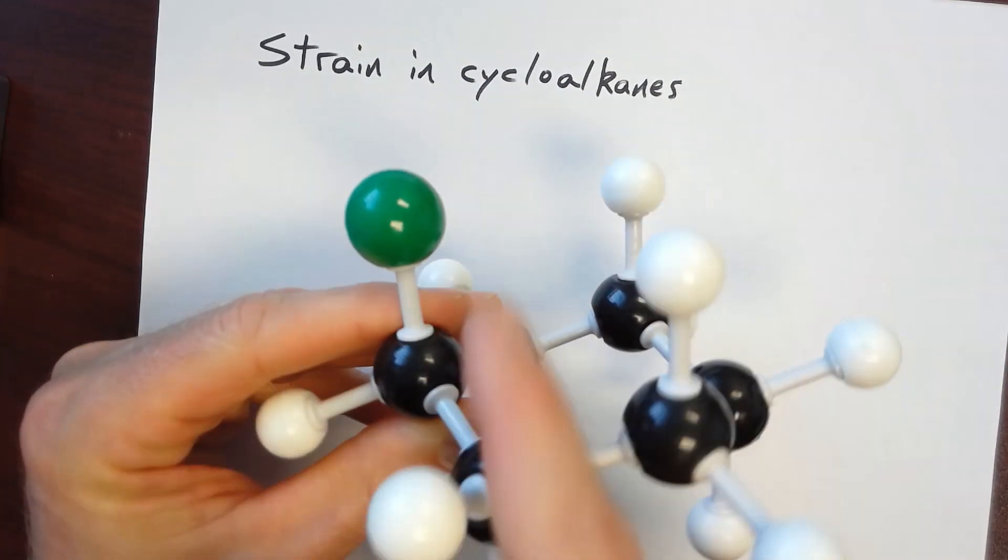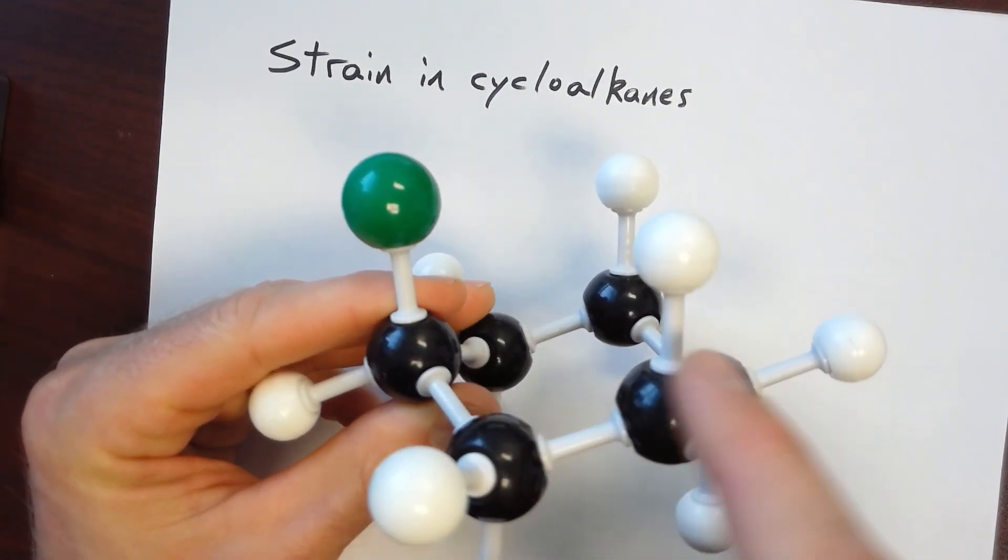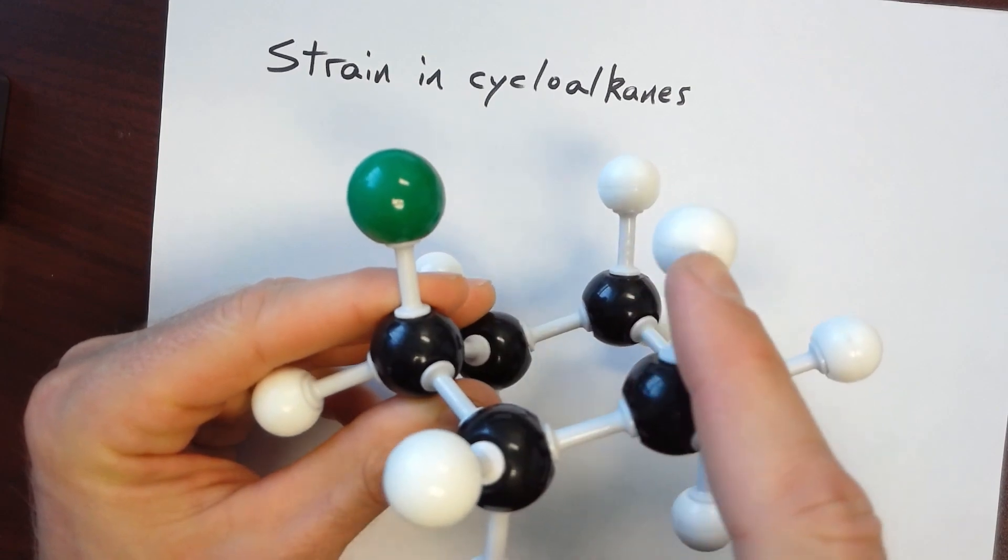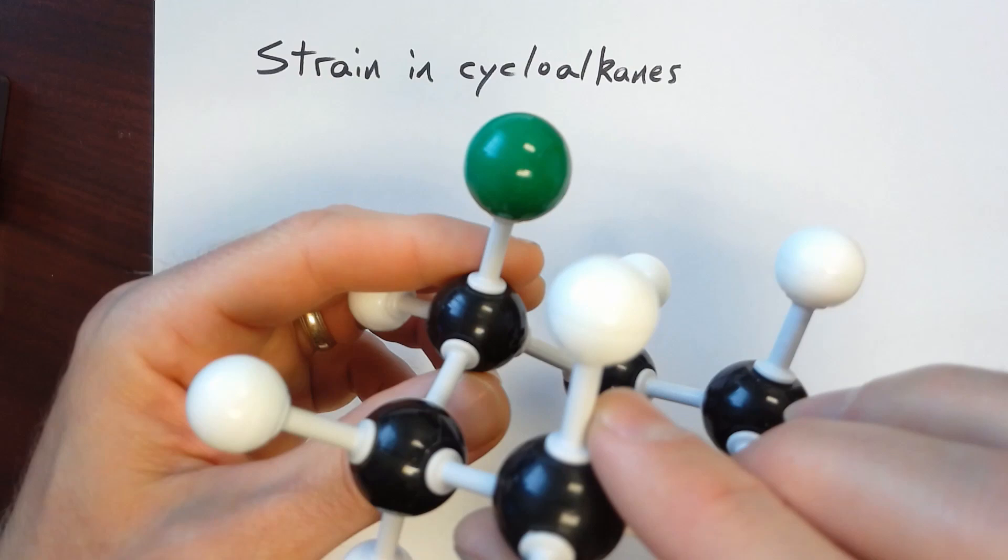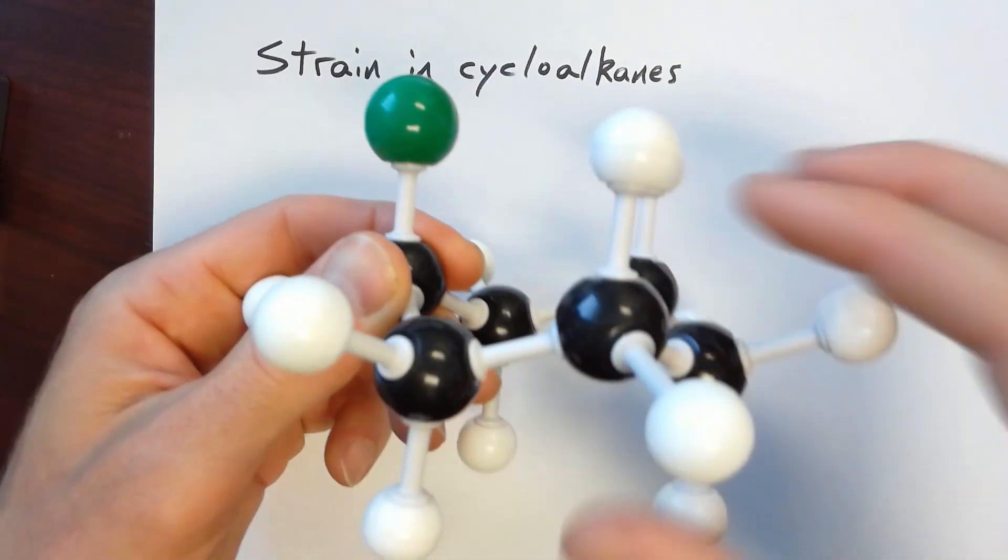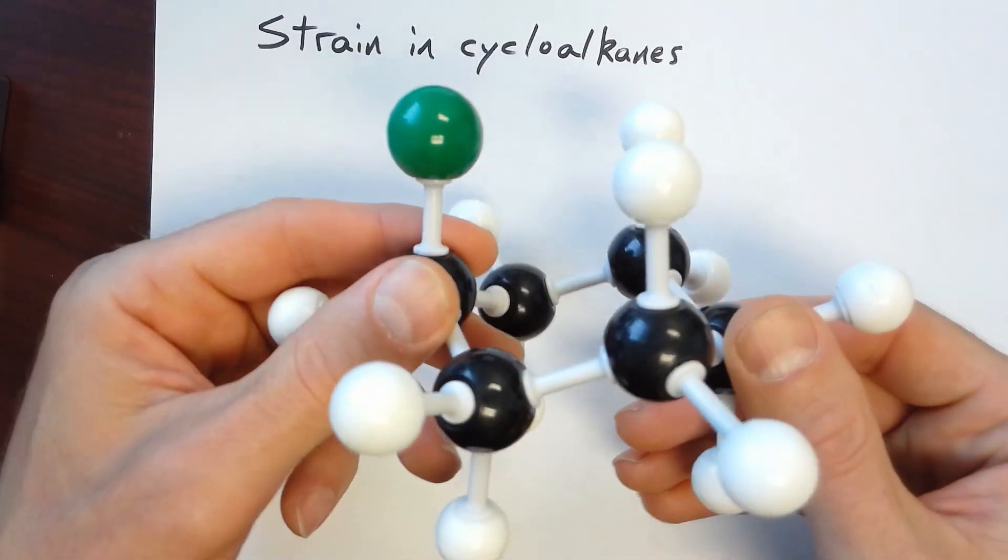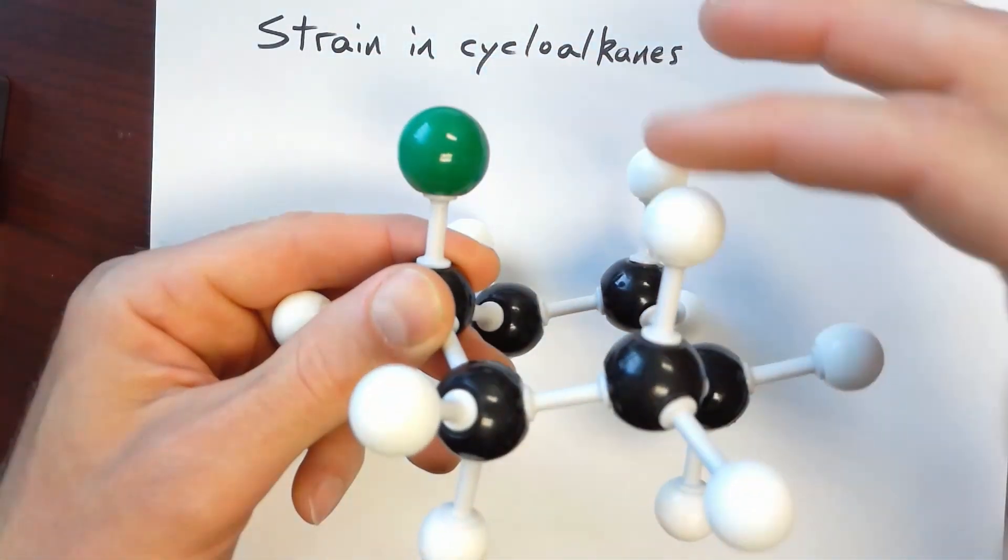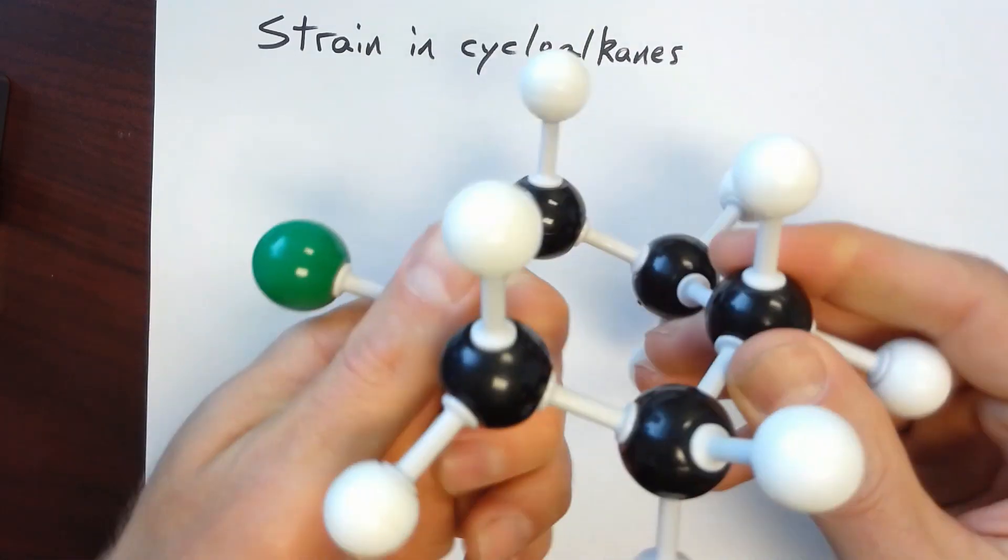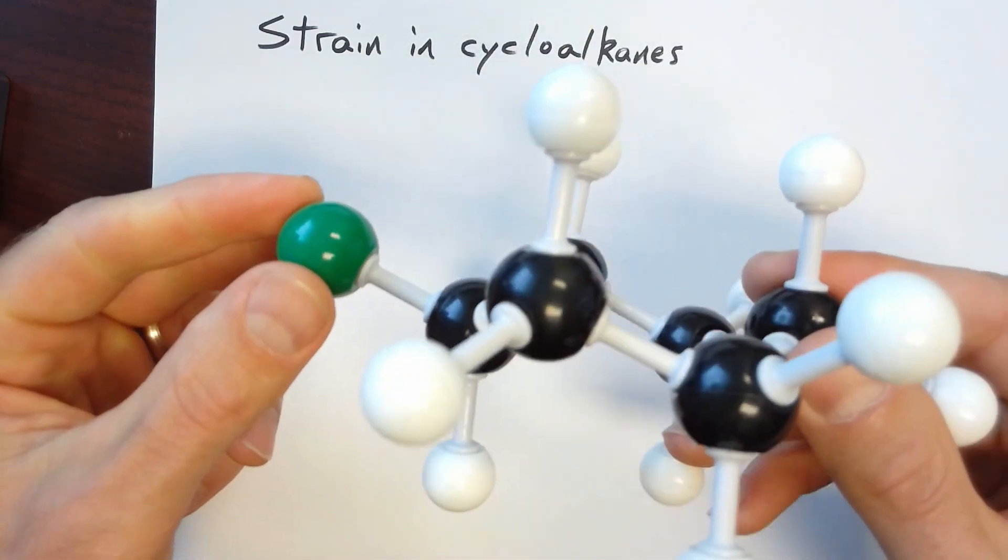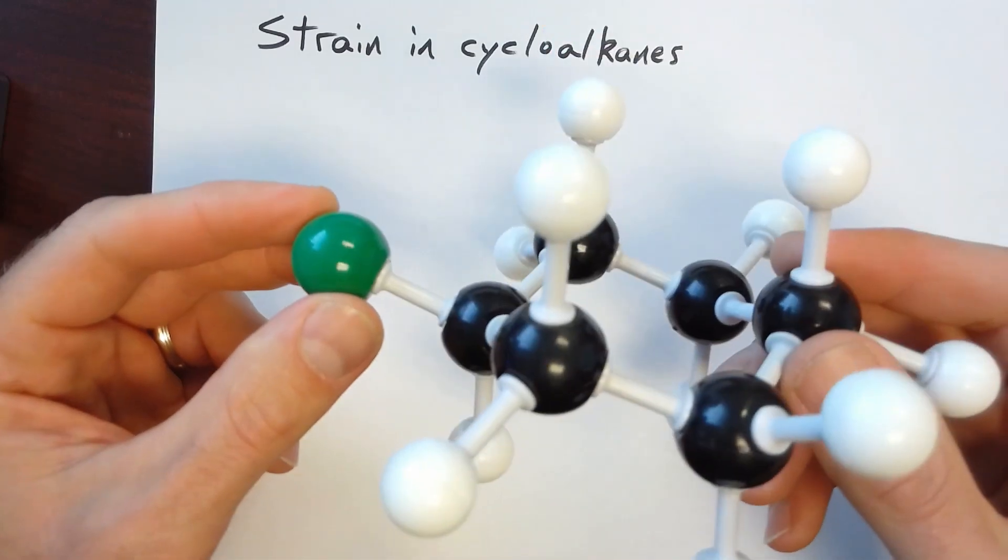And so we have what's called 1-3-diaxial interactions, so this is carbon 1-2-3, which is steric strain. So cyclohexane can have steric strain from these 1-3-diaxial interactions. So in this conformation, we've got 1-3-diaxial interactions. We do a ring flip, put that chlorine out here in an equatorial position, and we have less strain.